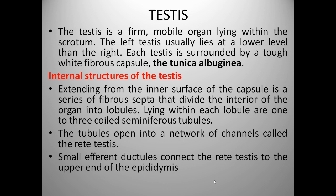The testis is a firm, mobile organ lying within the scrotum. The left testis usually lies at a lower level than the right, and each testis is surrounded by a tough white fibrous capsule called the tunica albuginea. Extending from the inner surface of the capsule is a series of fibrous septa that divide the interior of the organ into lobules. Lying within each lobule are one to three coiled seminiferous tubules. The tubules open into a network of channels called the rete testis. Small efferent ductules connect the rete testis to the upper end of the epididymis.